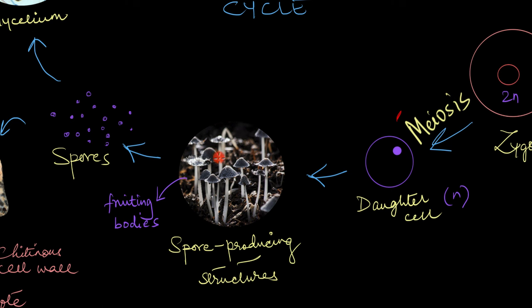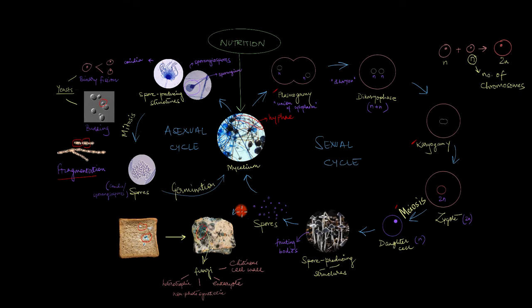Some examples of sexual spores include basidiospores and ascospores. By the way, basidiospores is the spores that you find in mushrooms. All of these fungal spores, both the sexual and the asexual spores, they are then dispersed into the air and they remain until they find a suitable place and environment to grow. Just like our beloved bread over here. And that is what the life cycle of a fungus really looks like.